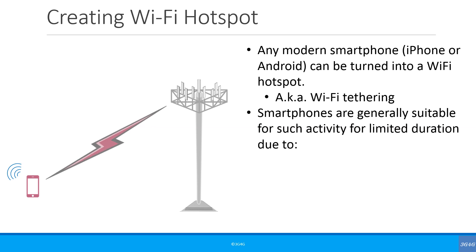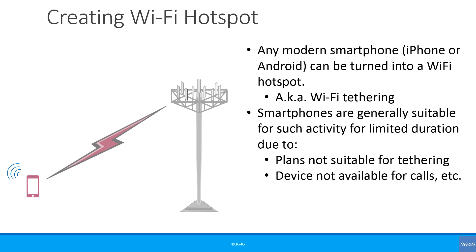Smartphones are generally used for such activities for a small duration only. This is mainly because with many operators they only allow limited tethering, or they slow down the connection if you are tethering. Note that this is a limitation put by the MNO rather than a technical one. Also, if you are tethering, it can sometimes be an issue to use your device for other activities. For example, if your phone does not support VoLTE, then it can do a CS fallback from 4G to 3G or 2G when a voice call is made or received. This affects the connectivity of all devices connected to the smartphone.